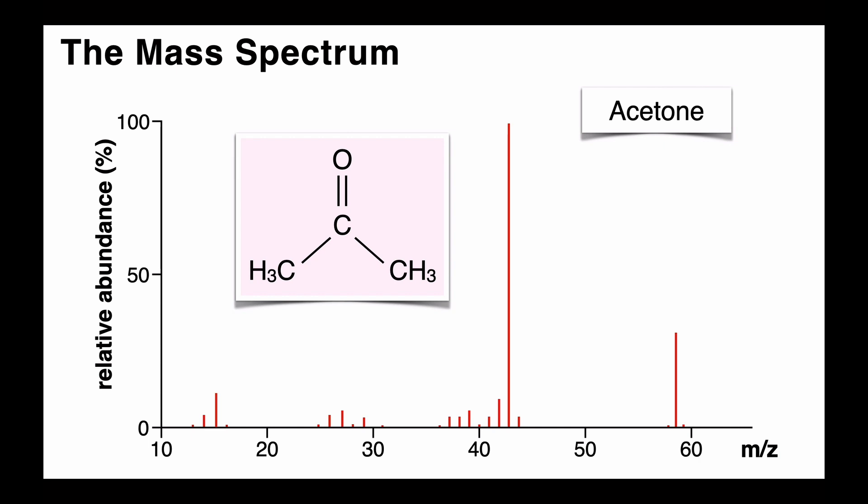In this case, we're looking at the acetone molecule. You can see that there are 4 different peak regions in the spectrum that correspond to different mass ranges. The peaks in these regions represent the different molecular fragments of different masses.